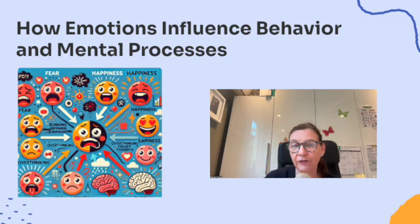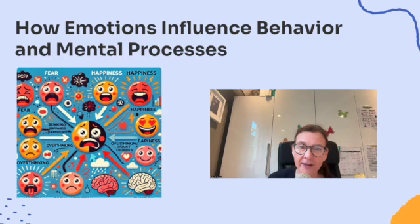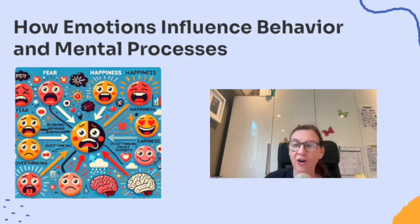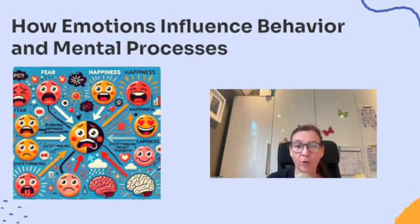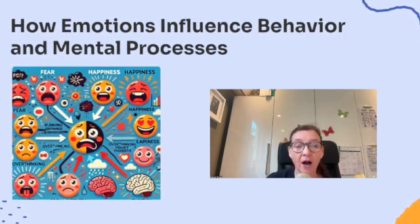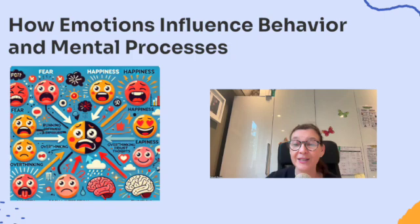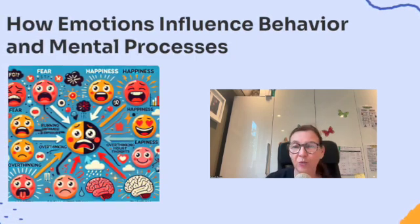Now let's talk about how emotions influence our behavior and mental processes — that was our CED question. Think about a time when you felt really scared or really happy. Did it change the way you acted or the way you thought about things? Emotions are like guides for our actions. For example, if you feel fear, your body might prompt you to run away or avoid a dangerous situation. On the other hand, if you feel happiness, you might feel more motivated to spend time with friends, smile more, or even try something new. It's like our emotions give us a little nudge on what to do next.